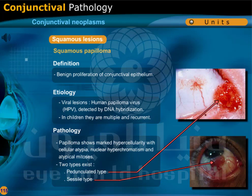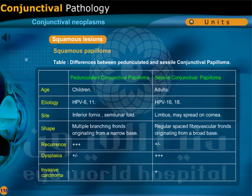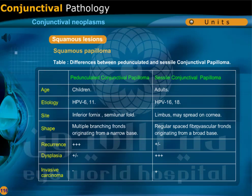Pedunculated conjunctival papilloma affects children, caused by human papilloma virus type 6 and 11, occurring in the inferior fornix and semilunar fold as multiple branching fronts originating from a narrow base. Recurrence is common, dysplasia may be present, and invasive carcinoma is unlikely.